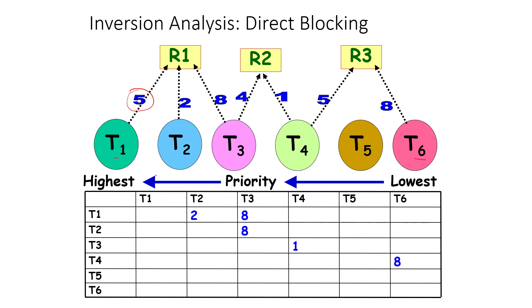If we look at direct blocking, T1 can get directly blocked because of T2 for two units of time, and because of T3 for eight units of time, because T1 just arrives and at that exact point T2 has acquired a resource and T1 also needs that resource. Similarly, T2 can get directly blocked by T3 because T3 just acquires a resource and at that point T2 comes. The maximum duration is again eight. Similarly, T3 can get blocked because of T4 for one unit of time.